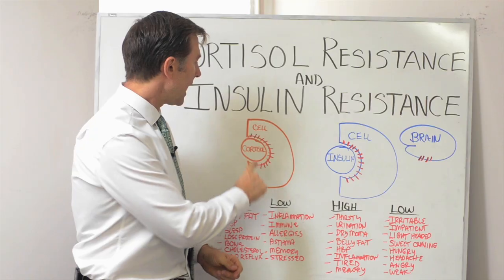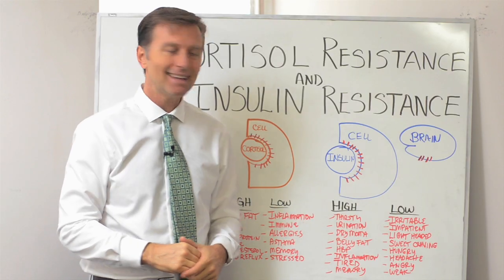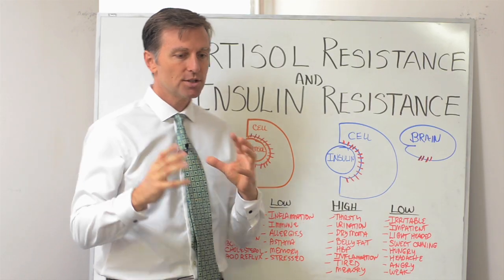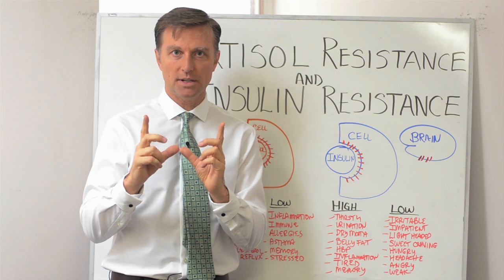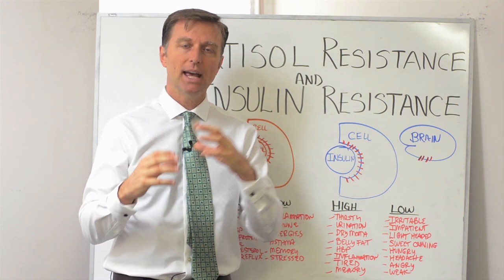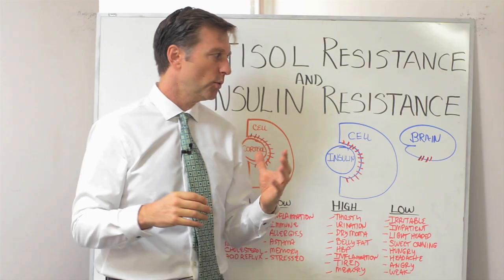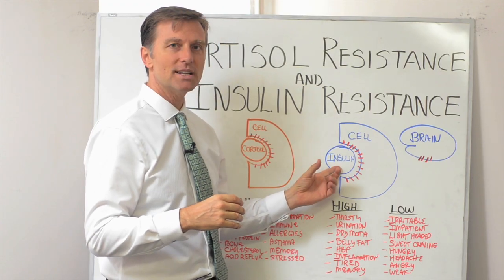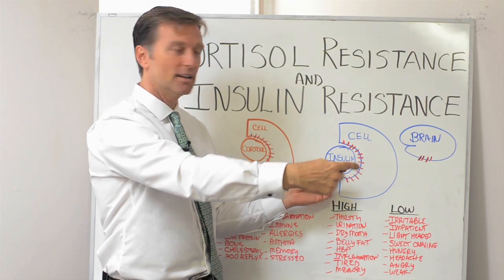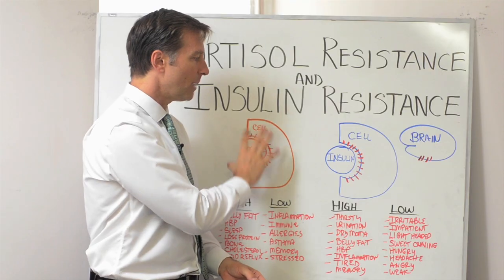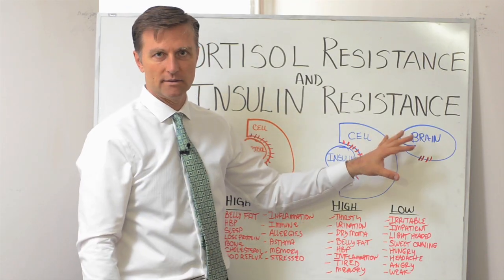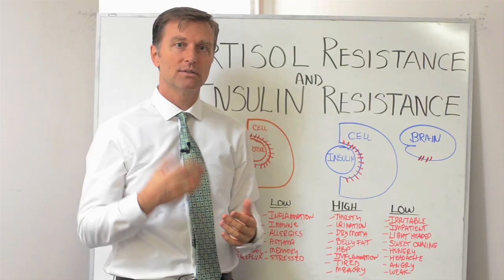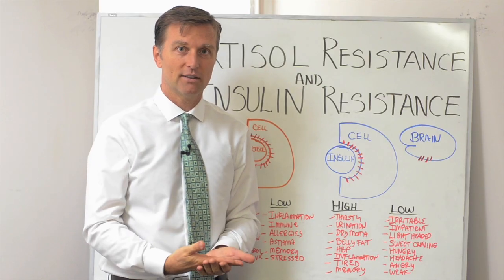One last thing: high cortisol can convert your body proteins into glucose, which then causes insulin resistance and eventually diabetes. So cortisol issues can cause insulin issues. This is all about stress and sugar — the motto is avoid stress and sugar. Thank you so much for watching, please click the share button below, and I'll see you in the next video.